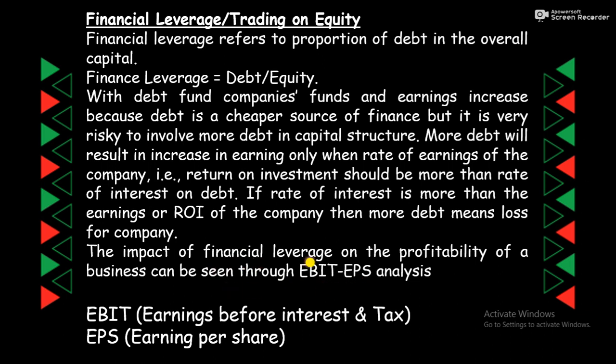The impact of financial leverage on the profitability of the business can be seen through EBIT-EPS analysis. EBIT means Earning Before Interest and Tax, and EPS means Earning Per Share. अब two examples लेंगे जिनमें हम EBIT-EPS analysis करेंगे, और last में हम conclude करेंगे — कि ROI अगर greater होता है rate of interest के comparison में तो situation favorable होती है, और अगर ROI less than होता है rate of interest के comparison में तो debt को avoid करना चाहिए. Next, example number one.